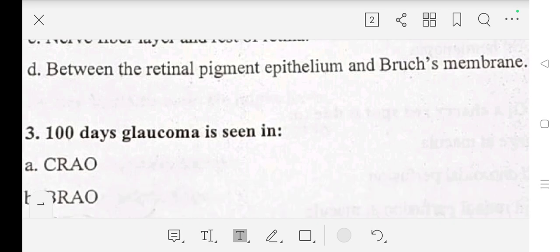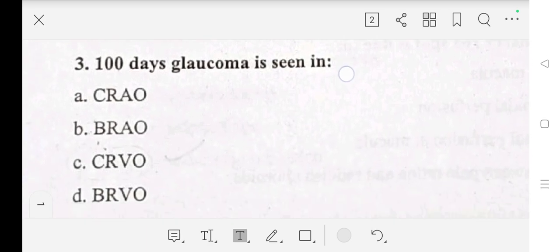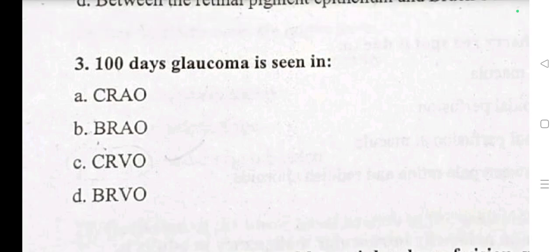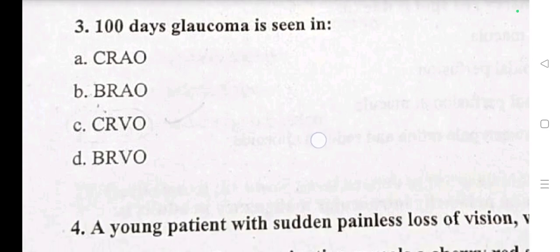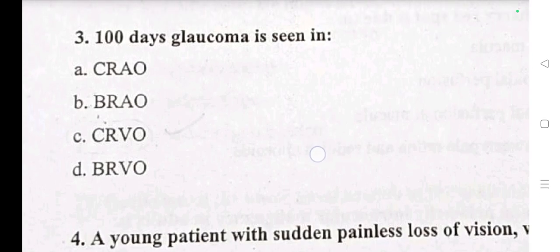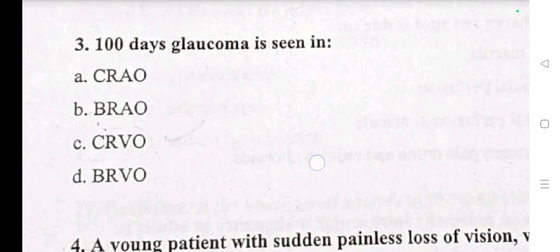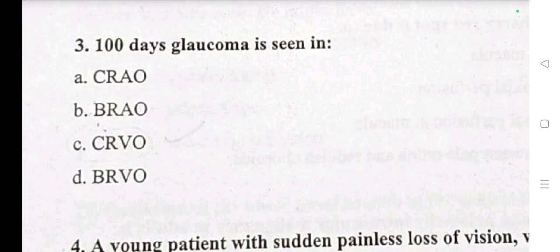Question number 3: 100-day glaucoma is seen in — A: CRAO, B: BRAO, C: CRVO, D: BRVO.